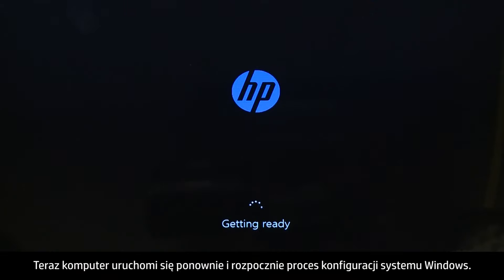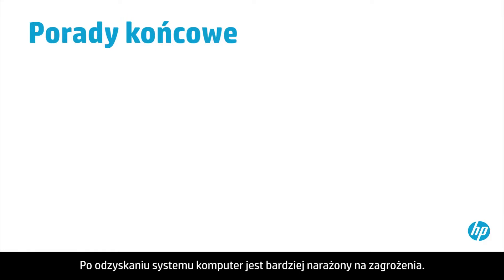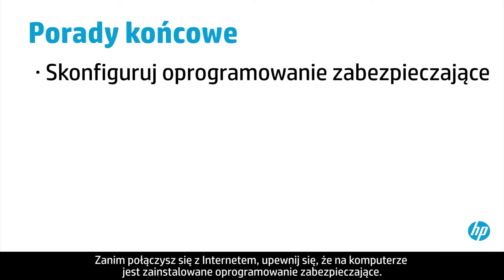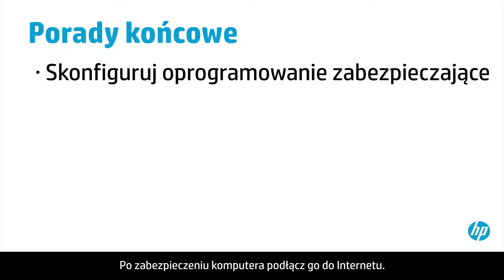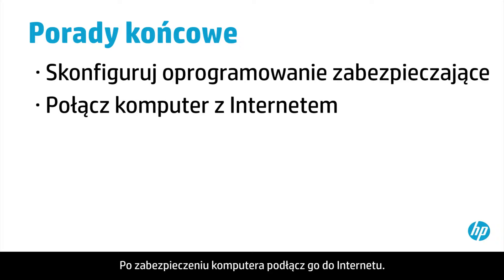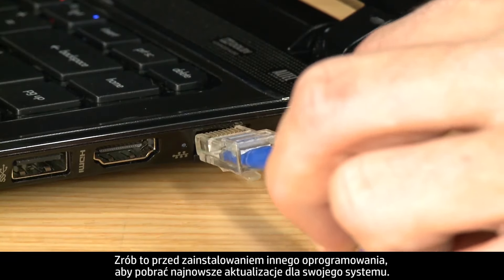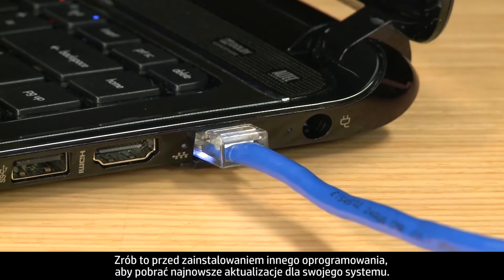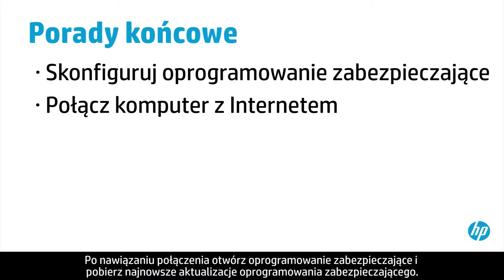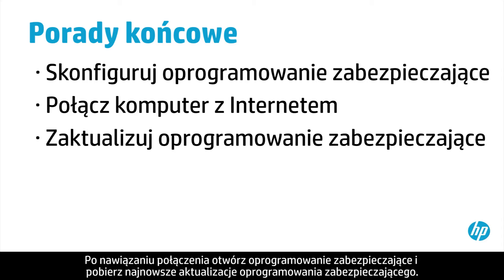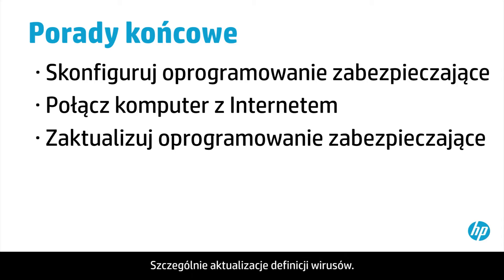Now your computer will restart and begin the Windows setup process. After recovery, your computer is more vulnerable to security threats. Make sure you have security software installed before connecting to the Internet. Once your computer is secure, connect to the Internet — do this before installing other software in order to get the latest updates to your system. After connecting, open your security software and get the latest updates, especially updates to virus definitions.